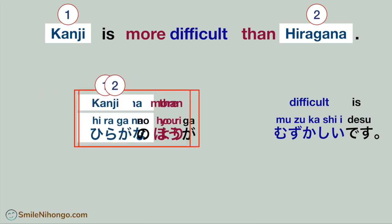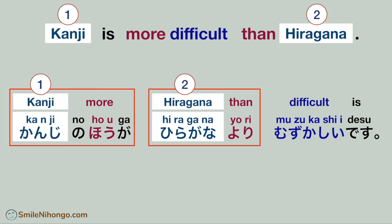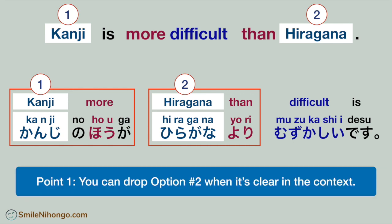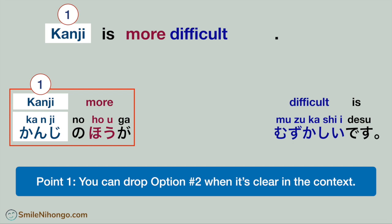OK, let's put them back in the original position. From here, I'm going to share three points that you need to keep in mind when comparing two options in Japanese. Please take notes if you can. Point number one: you can drop option number two with 'yori' when it's clear what the option is in the context.